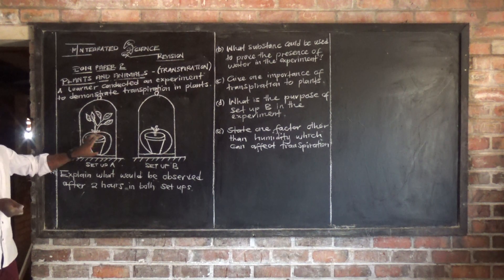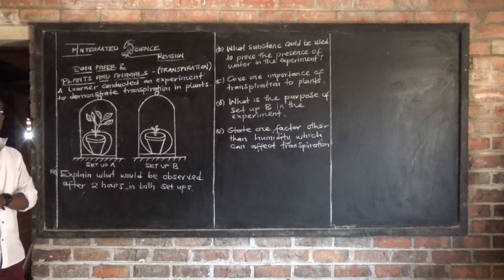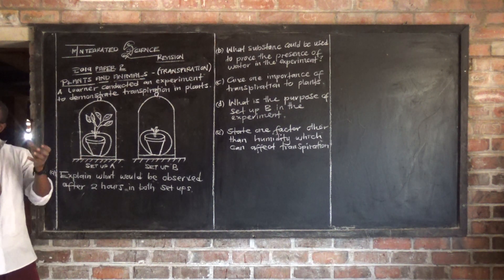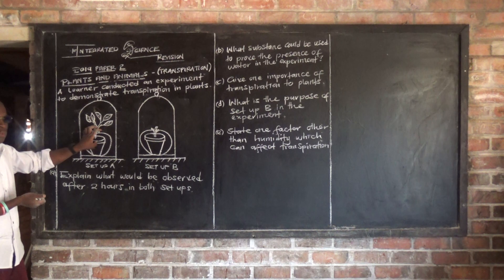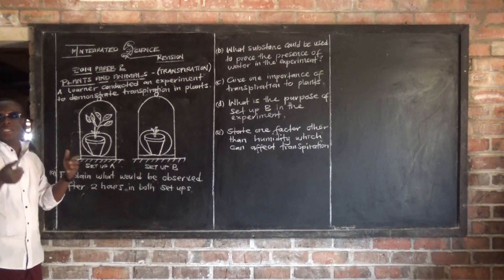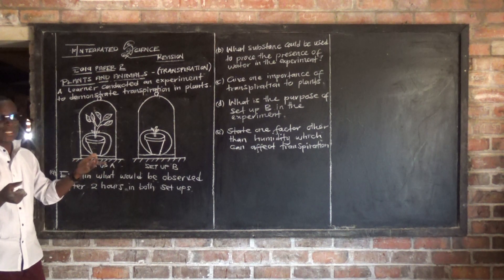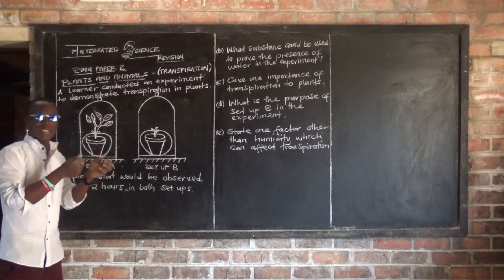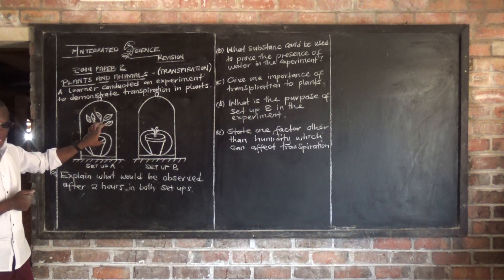This experiment is based on transpiration, which is the loss of water vapor by a plant through the stomata. Transpiration usually occurs in leaves, because leaves are the ones which consist of stomata. So Setup A is going to undergo transpiration at a very high rate, because it has leaves. Setup B does not have leaves, so transpiration is not expected to take place, or if it does, it will be at a very minimal rate. So we expect high transpiration in Setup A compared to Setup B.